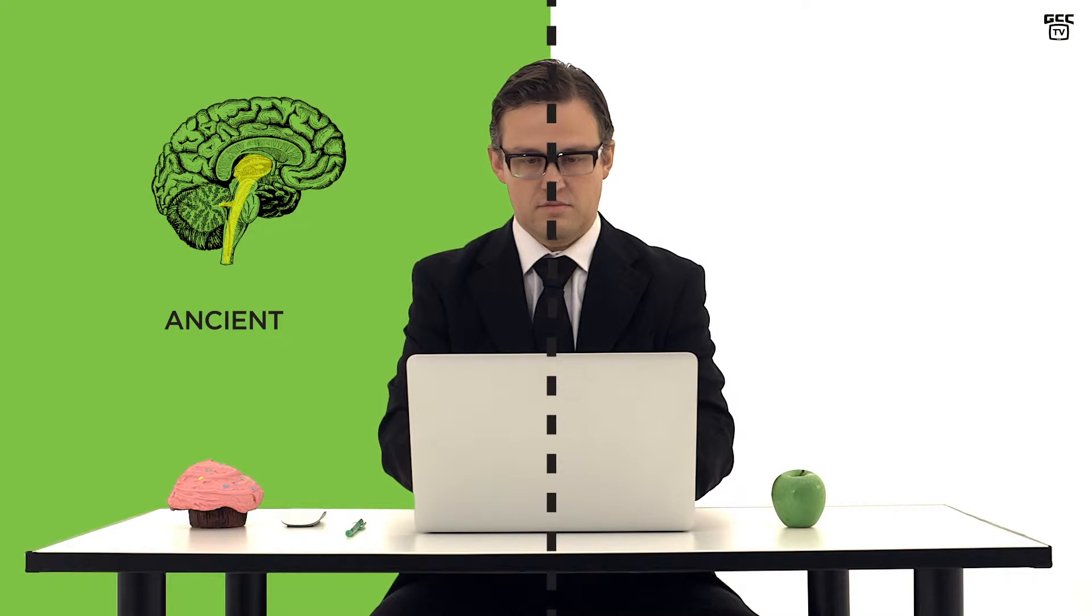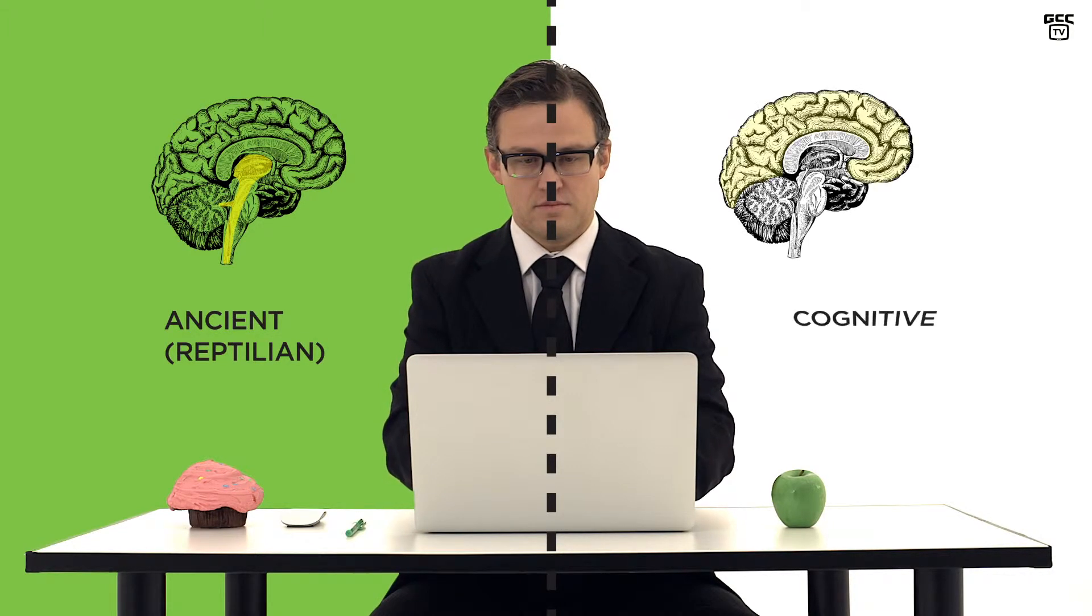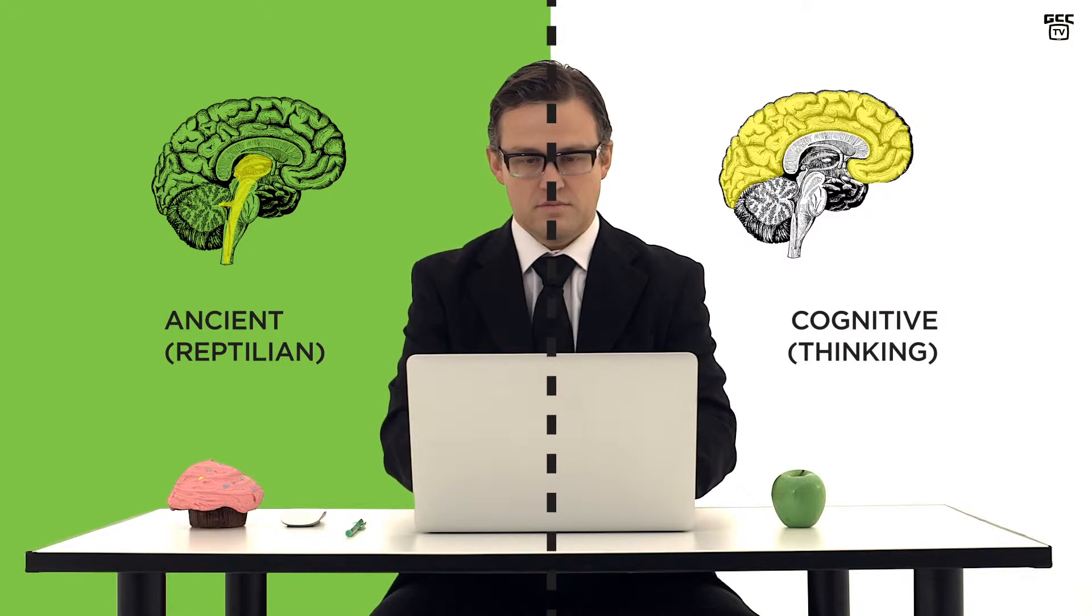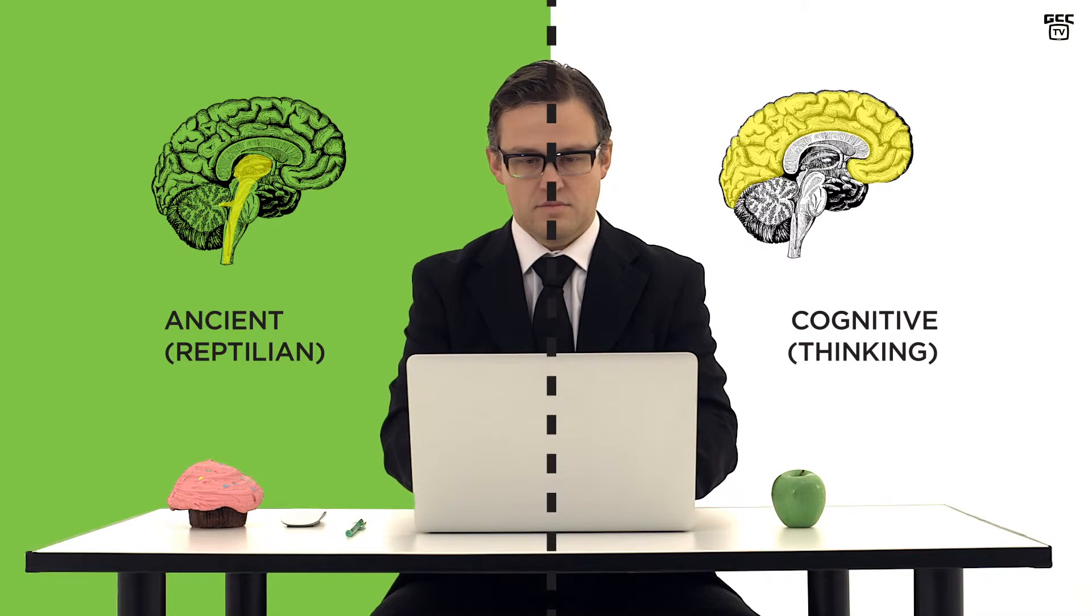Like all of us, his brain has an ancient part, often called the reptilian brain, and another more evolved cognitive or thinking part that we'll cover in a second. We can do this without the chainsaw.